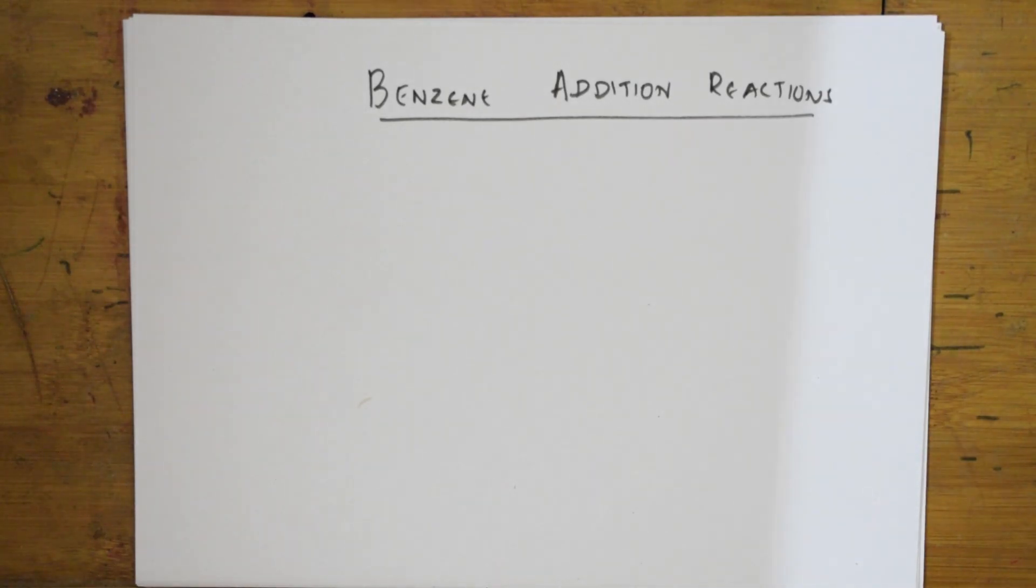Welcome back students to one more session on the properties of benzene. In the previous video I taught you the boiling point of benzene, the physical state which is liquid, and that it's a non-polar molecule hence insoluble in water.